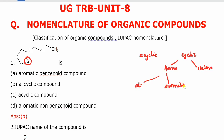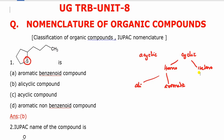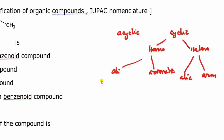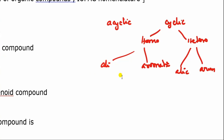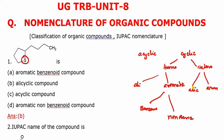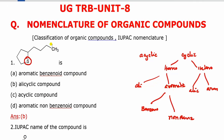It has a benzene ring — it is a benzenoid compound. It is a non-benzenoid compound if it lacks a benzene ring. This compound is an aliphatic cyclic compound — it has aromatic character and a cyclic structure, so it is an alicyclic compound. Your answer is B.